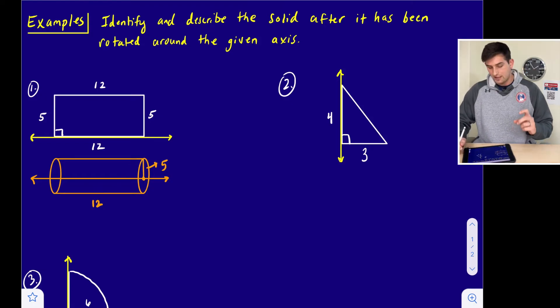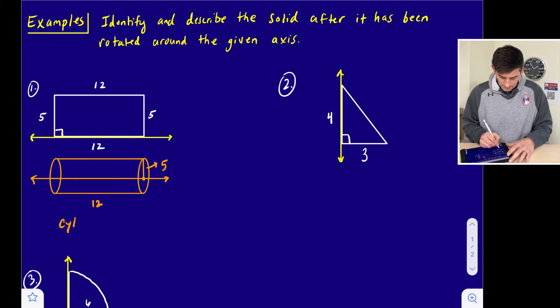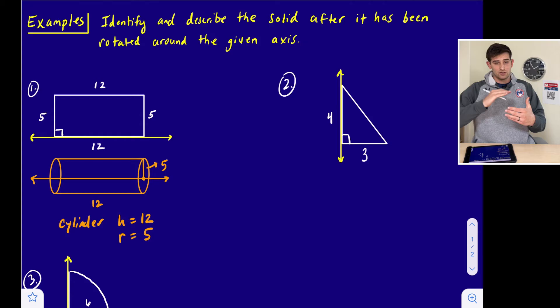If we think about our cylinder, we have a radius and we have a height of the cylinder. So we would say that this is a cylinder with a height of 12 and a radius of five. Once we rotate that rectangle around that axis, it is going to create a cylinder.